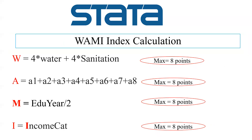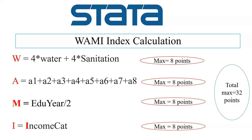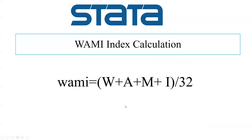The scoring for water and sanitation is assigned as 4 times water plus 4 times sanitation, where water means improved water and sanitation means improved sanitation. If access to water and sanitation is non-improved, the score is zero. Maximum eight points for water and sanitation, maximum eight points for assets, maximum eight points for education, and maximum eight points for income — giving a total score of 32 points. The WAMI formula is: W plus A plus M plus I divided by 32. This is the theoretical concept, so now let's go to Stata software to calculate it.